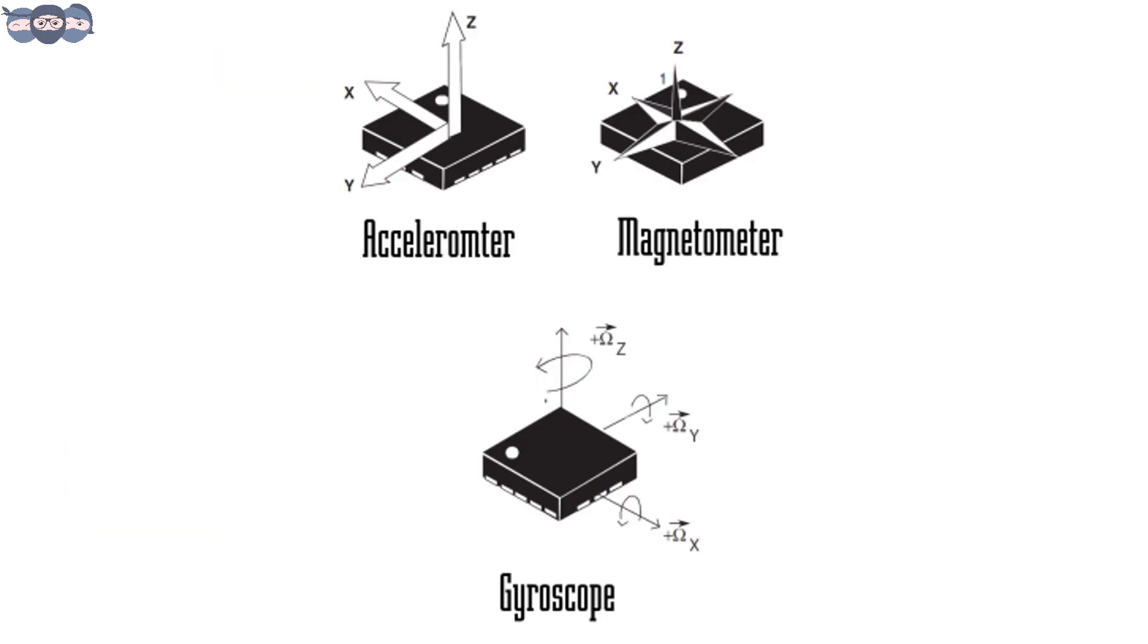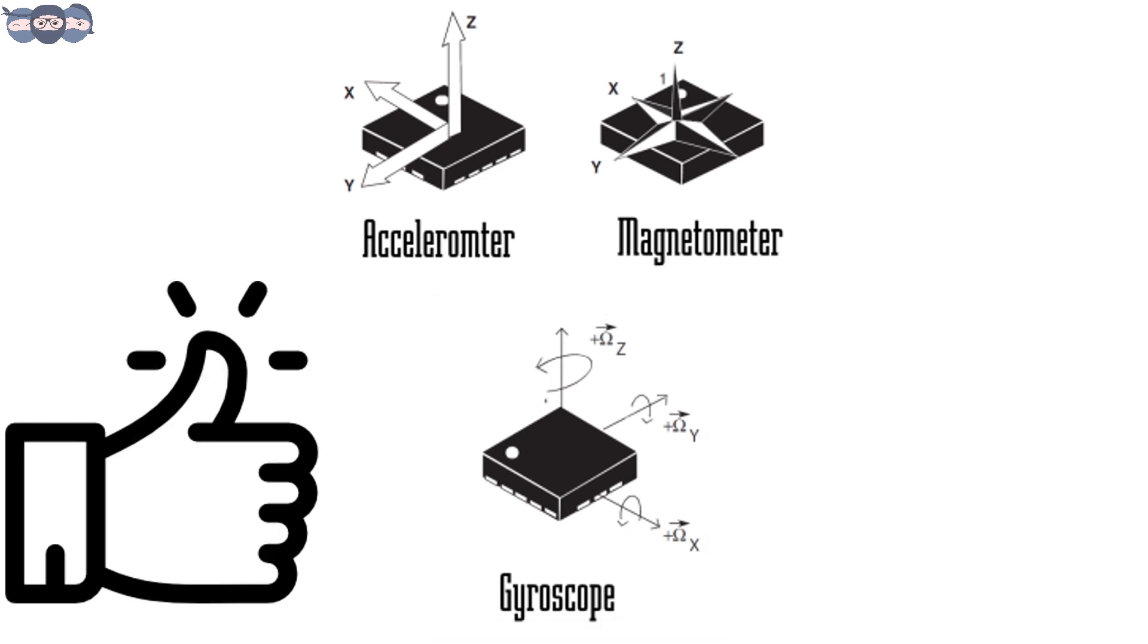That's it for the current video. Hope you have learnt about the working and construction of MEMS gyroscope. Give us a thumbs up if you liked the video. We will discuss about the measurement of magnetic field using magnetometer in the next video. Subscribe to the channel and click the bell icon to never miss an update from practical ninjas. Stay calm and keep learning. Until next time, peace out.